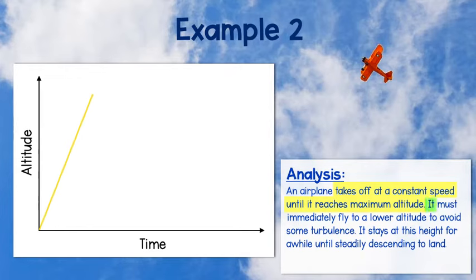Alright, next the plane must immediately fly to a lower altitude to avoid turbulence. To continue our graph, we will draw a line that is slanted downward or decreasing to show the drop of altitude.